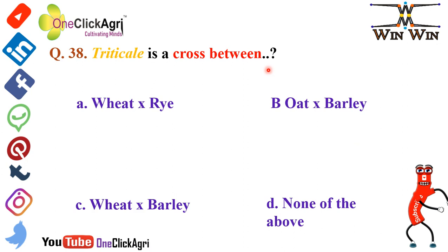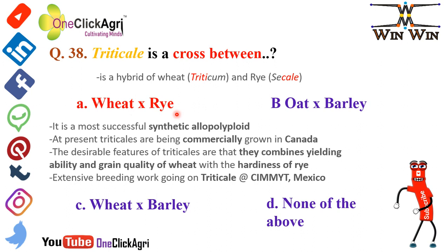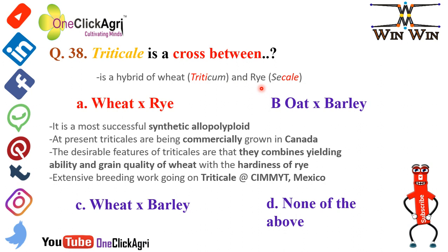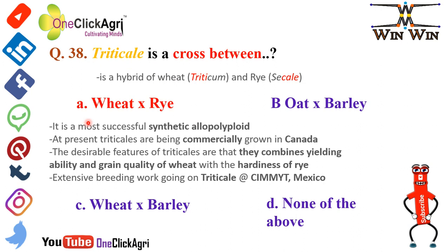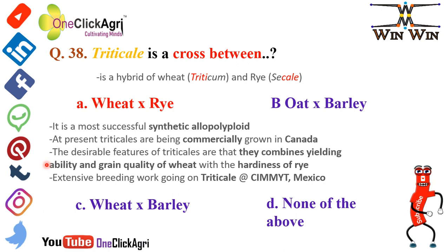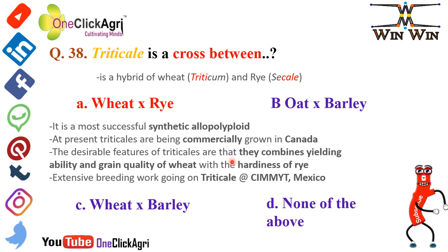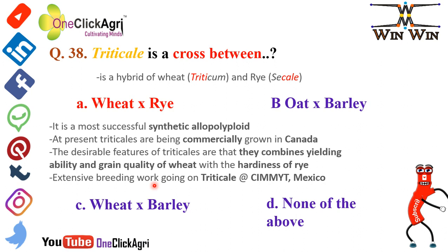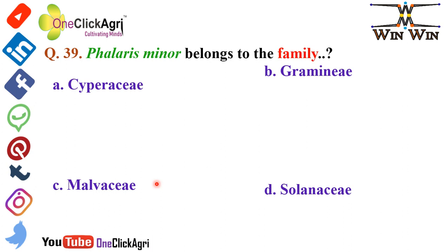Question number 38: Triticale is a cross between wheat and rye. The name triticale is derived from wheat (Triticum) and rye (Secale) — 'Triti' from Triticum and 'cale' from Secale. Triticale is the most successful synthetic allopolyploid cross. Triticales are presently being commercially grown in Canada. The desirable features of triticale combine the yielding ability and grain quality of wheat with the hardiness of rye. Extensive breeding work on triticale is ongoing at CIMMYT, Mexico.